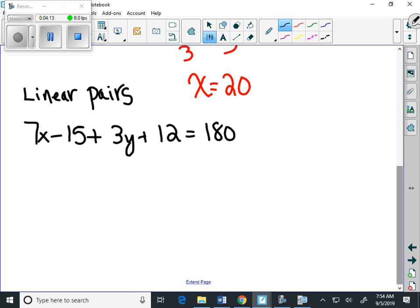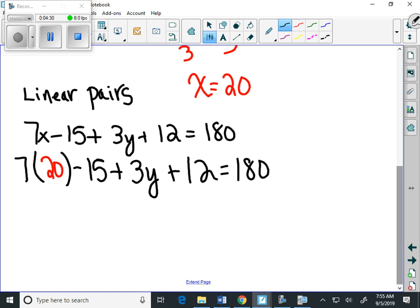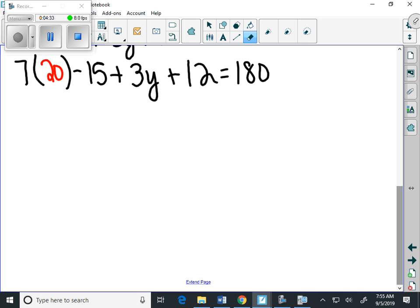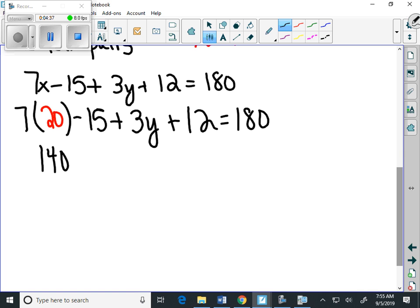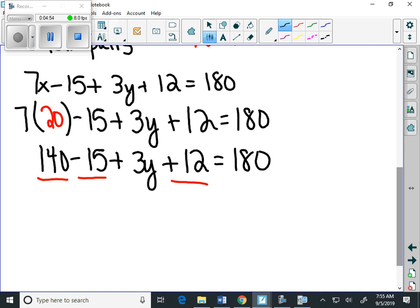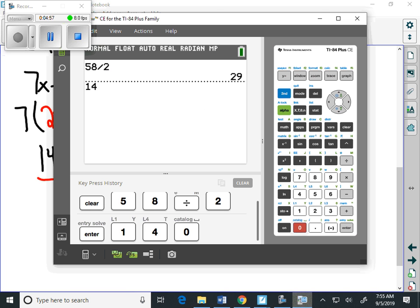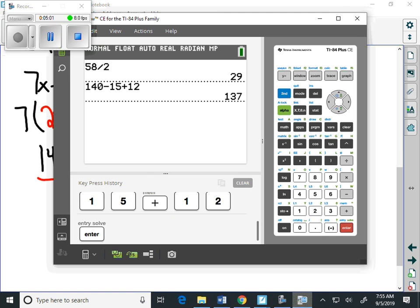And we know that x is 20. We just found that value here, and we can still see it on the page. So it's 7 times 20 minus 15 plus 3y plus 12 equals 180. And then we can combine like terms. Well, 140 minus 15 plus 12, those are all like terms.